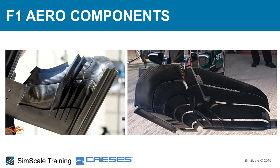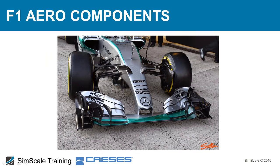Looking from the underside of the front wing, we see additional vortices. The Y250 is generated in the inner region, but there are also vortices from the outer upper edge of the end plate due to pressure differences. A duct or tube on the underside creates a vortex that prevents high-pressure air from escaping into the low-pressure region beneath the wing, ensuring the front wing works efficiently.